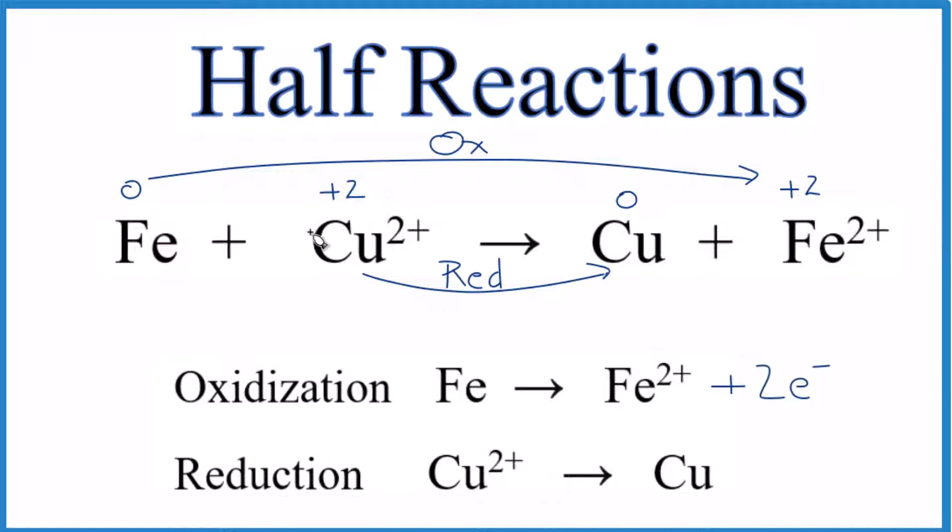And the copper, that gained two electrons. So this charge canceled out and the charge was balanced. And it's pretty easy to add the electrons for these simple redox reactions.